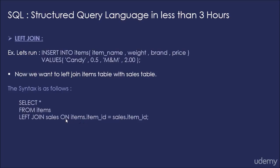So it says connect items with sales — that is the left join — and use the item id field: items.itemid should be equal to sales.itemid. Now let's see what the result is of this particular left join.